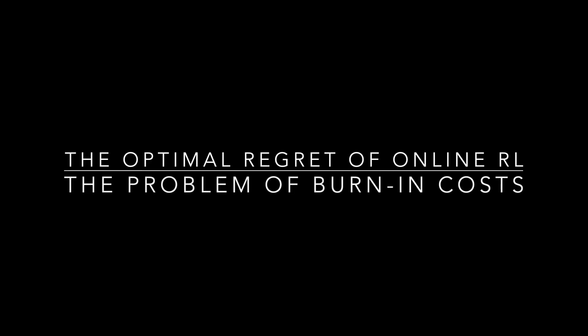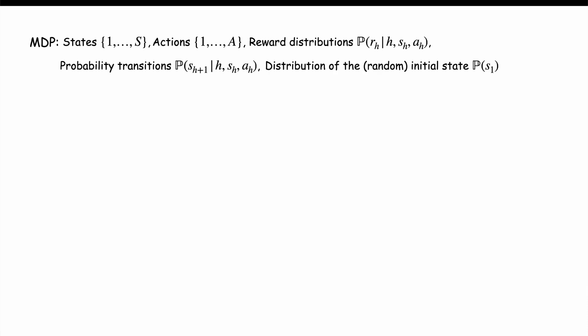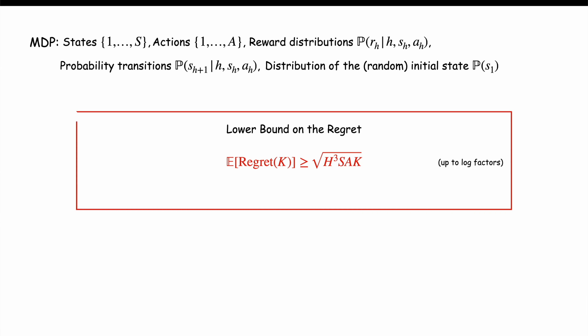The optimal regret of online RL and the problem of burning costs. Alright, we have an MDP with S states, A actions, horizon H and K episodes. We want to find a policy to minimize the regret. What is the best regret we can hope for? Well, it is known that up to log factors, the optimal regret is this, when the number of episodes K is larger than HsA.